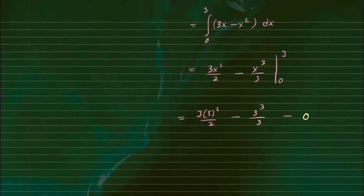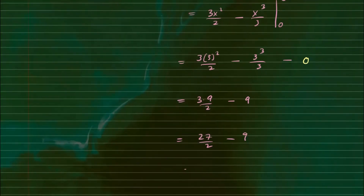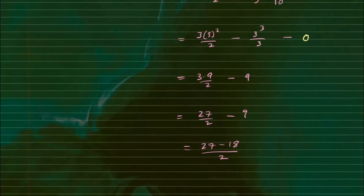Evaluating at the upper limit: 3 times 3 squared over 2 minus 3 cubed over 3 gives us 27 over 2 minus 9, which equals 27 over 2 minus 18 over 2, and that gives us 9 over 2. So the area of the region bounded by both curves is 9 over 2.